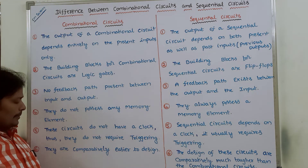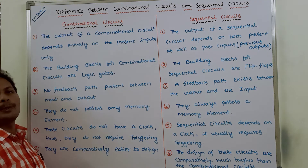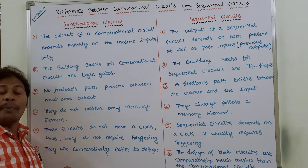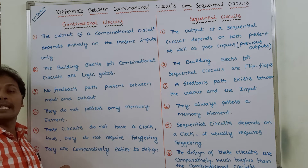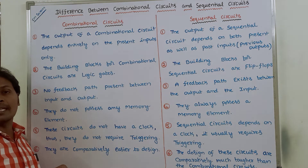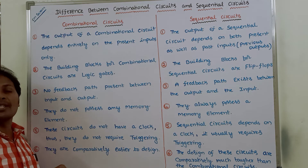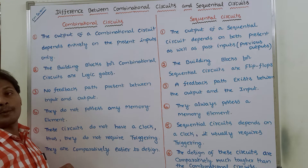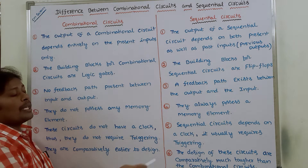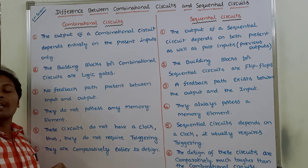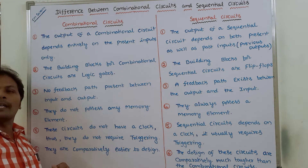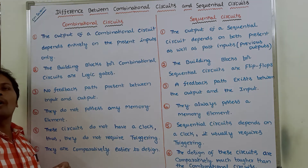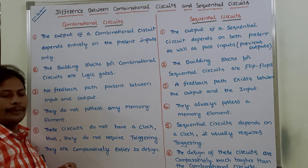Sixth point: combinational circuits are comparatively easier to design. To build combinational circuits we use simple logic gates such as AND, OR, and NOT gates. Whereas the design of sequential circuits is much tougher than combinational circuits, because flip-flops are somewhat difficult to understand, making sequential circuits harder to design.